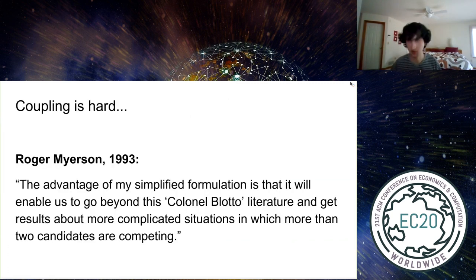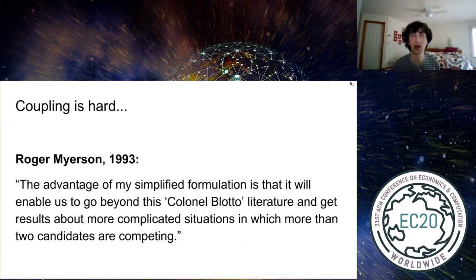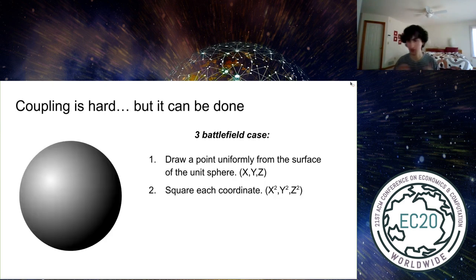Now, the issue here is that these marginals are no longer so simple as uniform distributions. It was slightly tricky to couple the uniform distributions before, and now we have to deal with coupling these more complicated distributions. As you mentioned, Roger Meyerson had considered this problem before in a paper in 1993. He ended up simplifying the problem by accepting the fact that the constraint would only be satisfied in expectation, as opposed to almost surely. And this allowed him to get results about the three-player setting. What we're able to do is actually couple these distributions and surpass Meyerson's result.